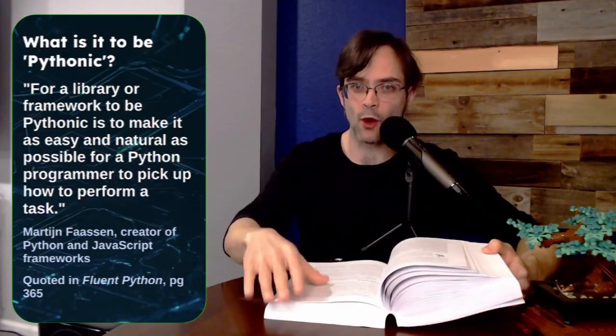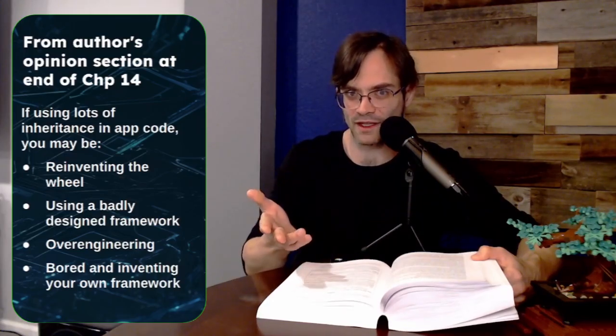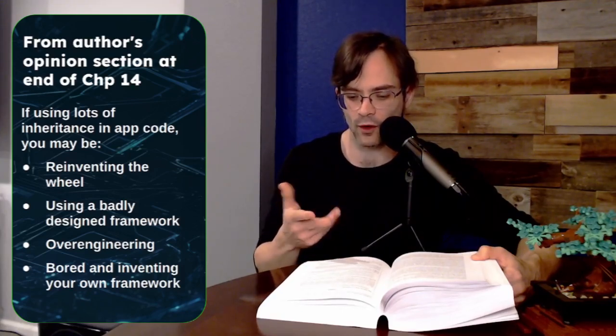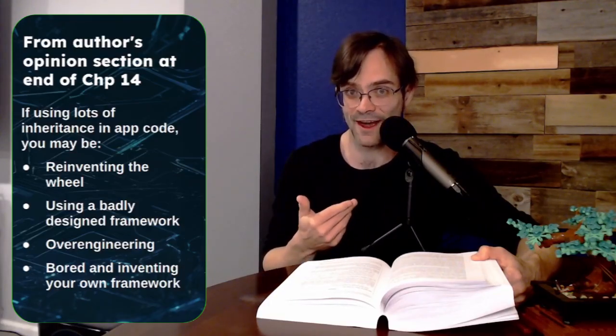And another piece of coding wisdom from the author himself that I really appreciated is on page 519, and he's basically telling you that you should not be defining multi-level class hierarchies if you're writing normal app code. And so he says that if you are writing an app and you're defining complex hierarchies, you're going wrong, most likely, and you're probably making one of these mistakes. You are reinventing the wheel. You are using a badly designed framework. You are over-engineering. Or you're just bored and you're building your own framework. So you can read more about it in the book, but I found this very interesting, and it definitely neatly summarizes where I think some frameworks and some programmers go wrong with overdoing their object-oriented hierarchies.